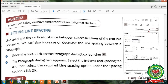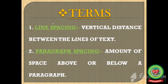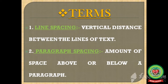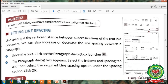Before starting our topic, we will discuss the terms. First is line spacing: the vertical distance between the lines of text — that is, the amount of space between each line of text. Second is paragraph spacing: the amount of space above or below a paragraph.